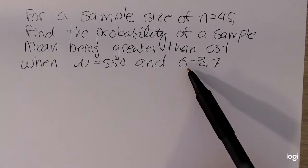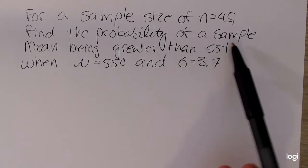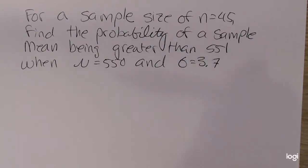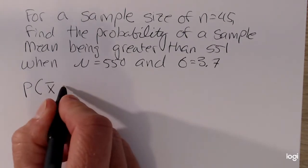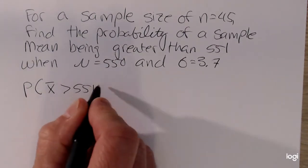One thing to notice about this problem is that it's asking for the probability for a sample mean, so x bar is our random variable, not an individual x value. In probability notation, this is going to be the probability x bar is greater than 551.